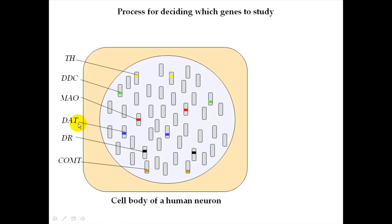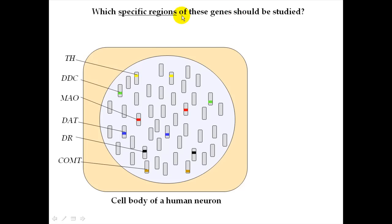We're going to narrow our focus — not only will we talk about the criteria that would make a particular gene a possibly good one to study, but we're going to try to figure out what criteria would make a specific region of a gene a good one to study for this purpose. So we're going to consider specific regions of each gene and list some of the criteria that would give a gene region a lot of potential as far as possibly influencing smoking behavior between different people.